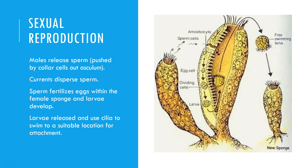Female sponges have eggs that are held in the sidewall of the sponge. The sperm cells make their way into the sponge through the ostia and find their way to an egg. The sperm fertilizes the egg, it begins to develop and turns into a larva, and then is pushed back out of the sponge again through the osculum, giving us free-swimming larvae.